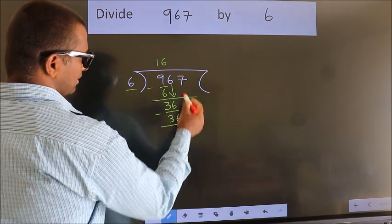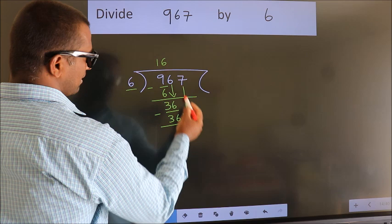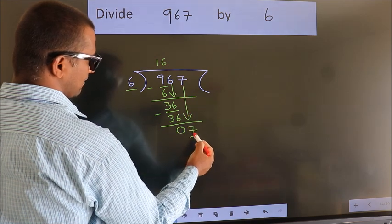After this, bring down the beside number. So, 7 down. 7.